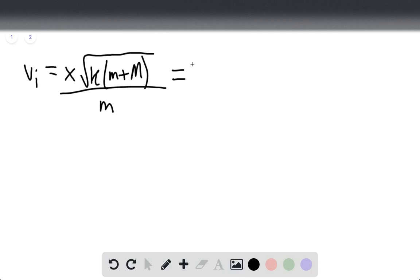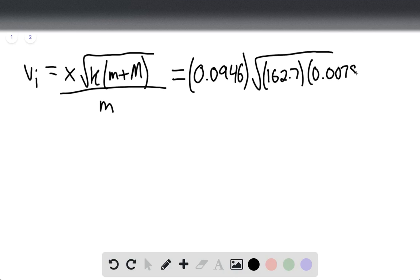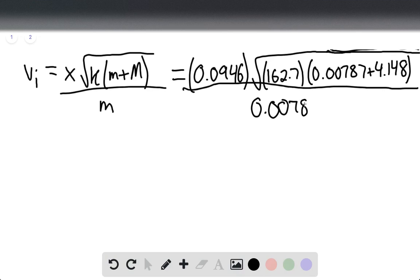This is going to be 0.0946 times the square root of 162.7 times (0.00787 + 4.148) divided by the mass of the bullet, 0.00787.